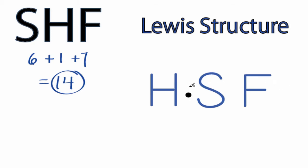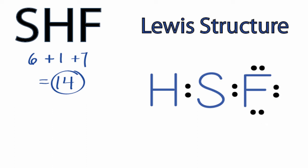We'll put 2 electrons between atoms to form chemical bonds — we've used 4. Then we'll complete the octet for fluorine: 6, 8, and 10, and then back to that central sulfur for 12 and 14.